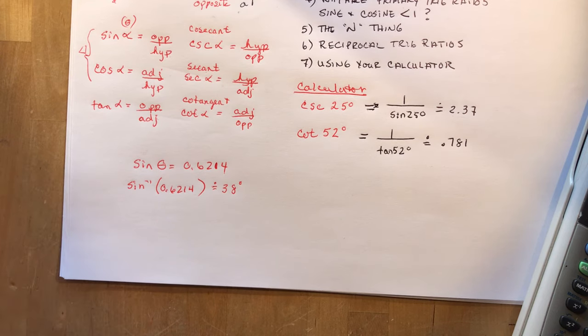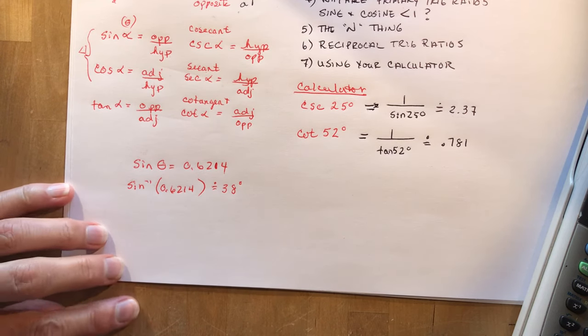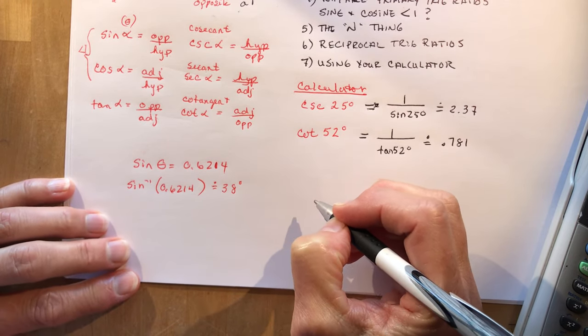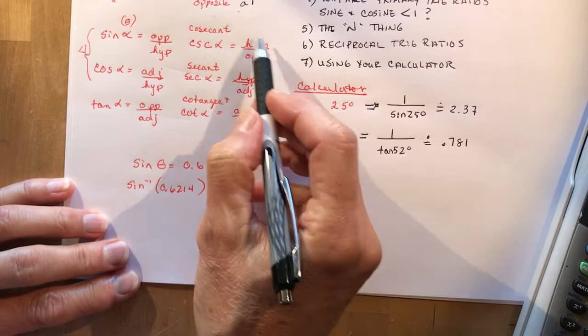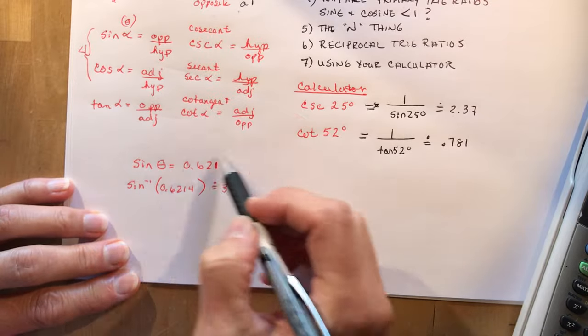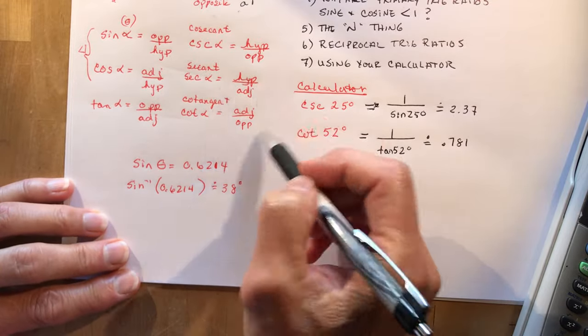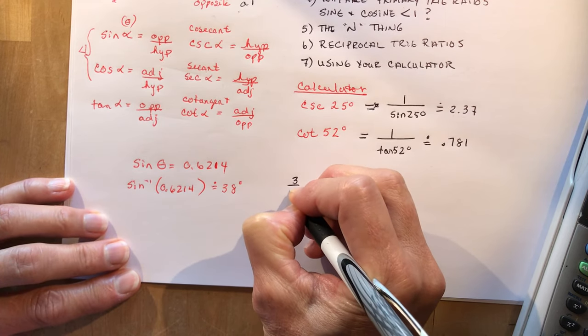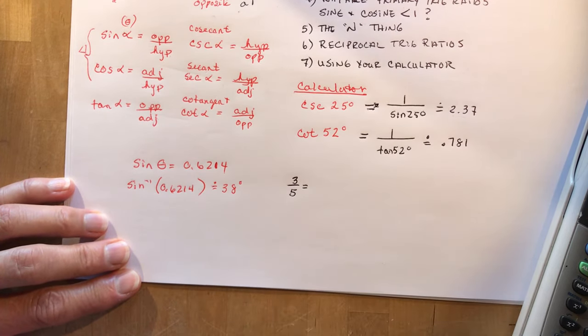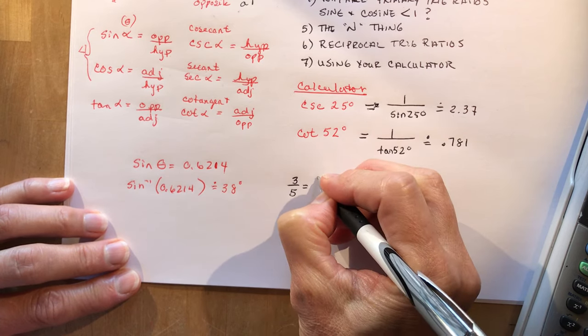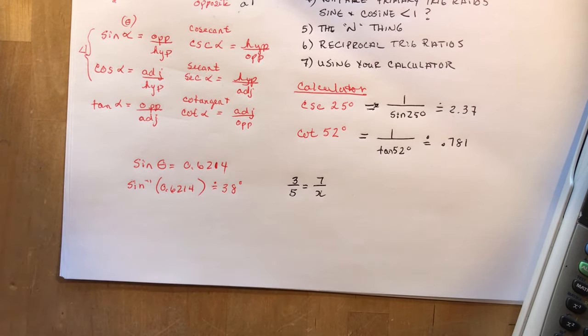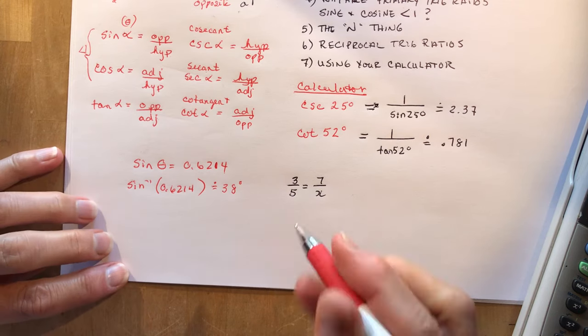Okay, now let's talk a little bit about this N thing that I was telling you about. And it is the most handiest little tool to solve for ratios, which is what you have here, right? These are all ratios, opposite over hypotenuse. These are all ratios. So if I said, let's just do a really simple thing, nothing to do with trig: 3 over 5 is 7 over x, and I want to solve for x.